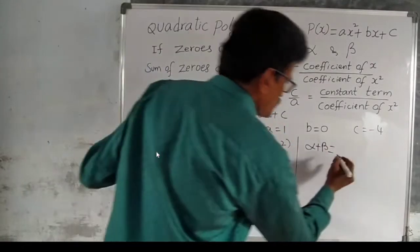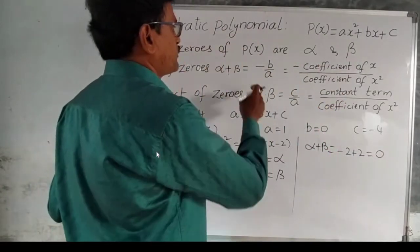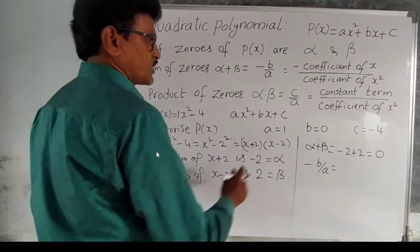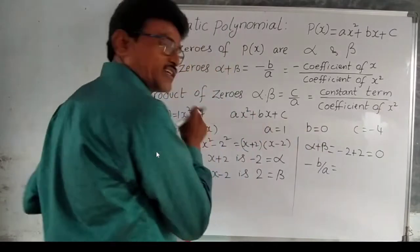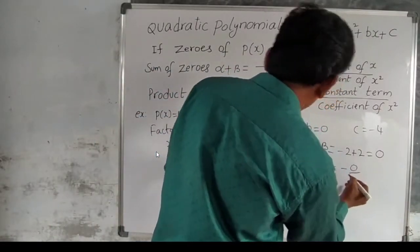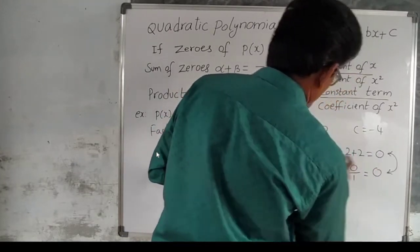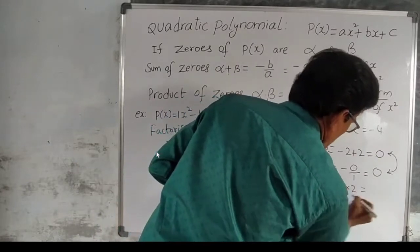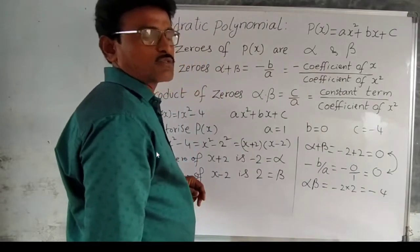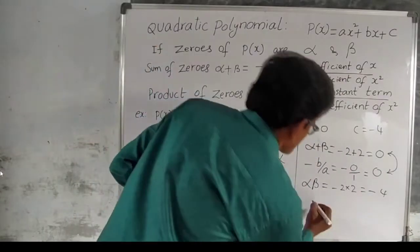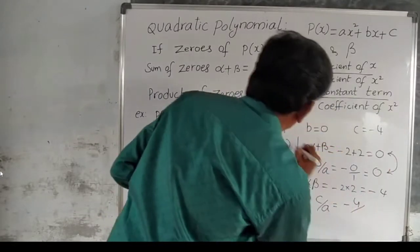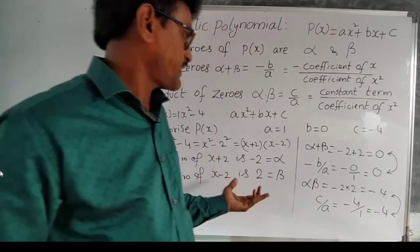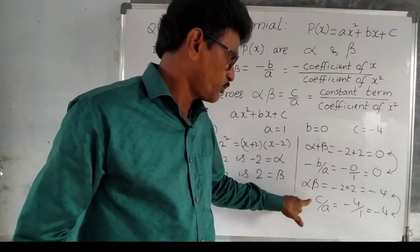Now alpha + beta = minus 2 + 2 = 0. And minus b by a = minus 0 by 1 = 0. Both are the same. Now alpha × beta = minus 2 × 2 = minus 4. And c by a = minus 4 by 1 = minus 4. Both are equal. So alpha + beta = minus b by a, and alpha × beta = c by a is verified.